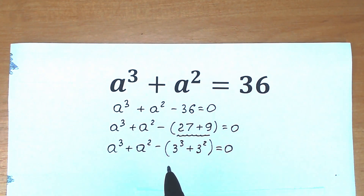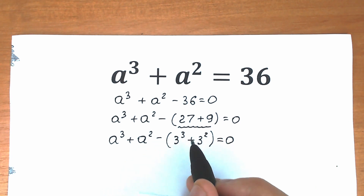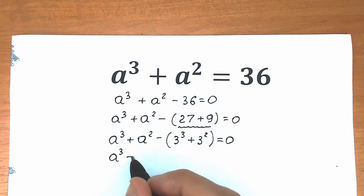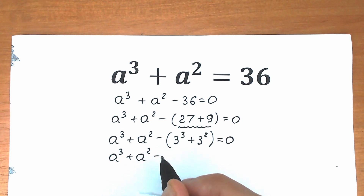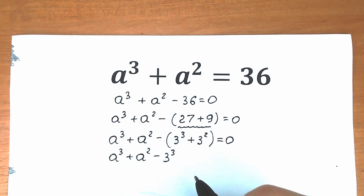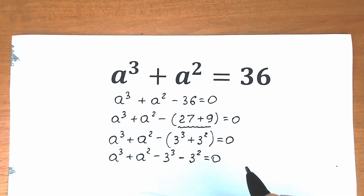Now let's open the parenthesis. We have a³ + a² - 3³ - 3² = 0. Notice we change the sign because of the minus before the parenthesis, so we get minus 3² as well.